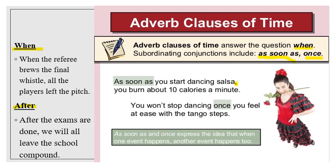Another example: 'When the referee blew the final whistle, all the players left the pitch.' 'When the referee blew the final whistle' is the dependent clause. 'All the players left the pitch' is the independent clause. Similarly: 'After the exams are done, we are all leaving the school compound' — 'after the exams are done' is the dependent clause, describing the time.